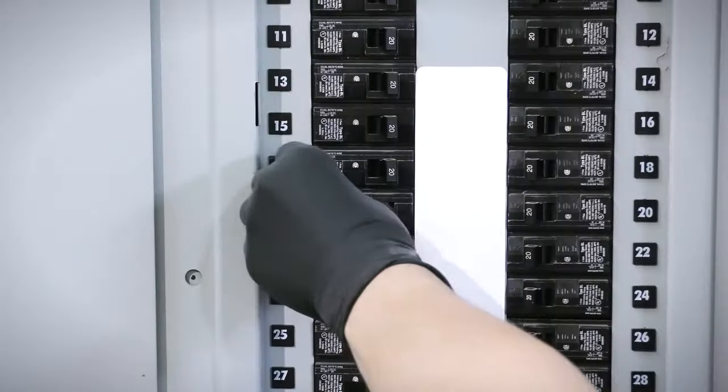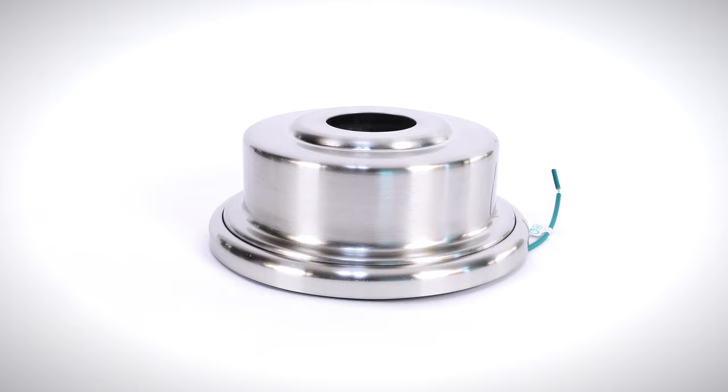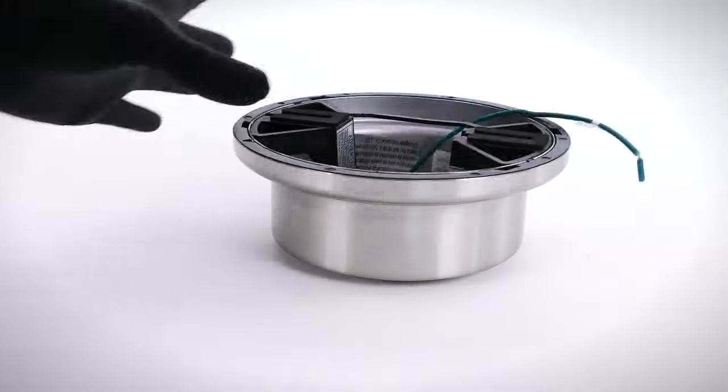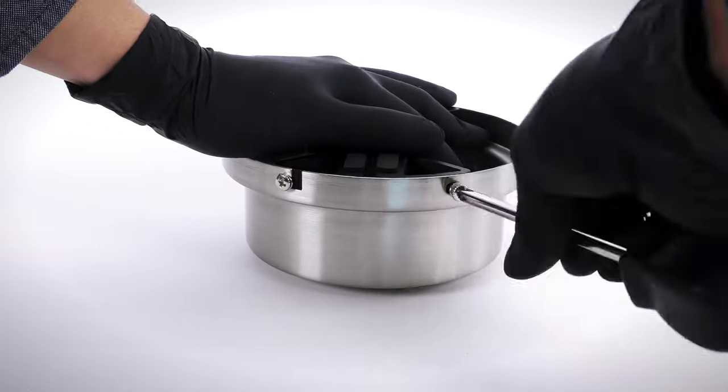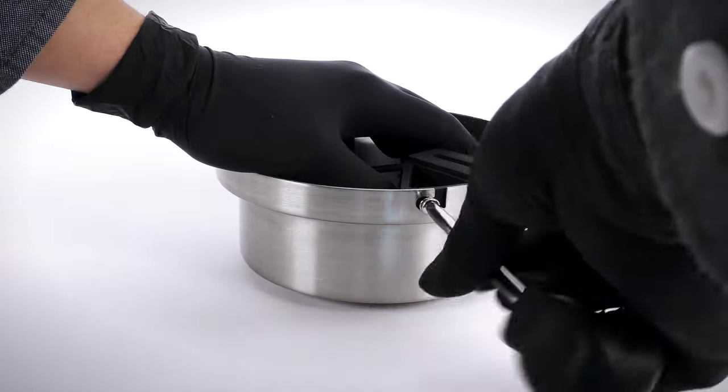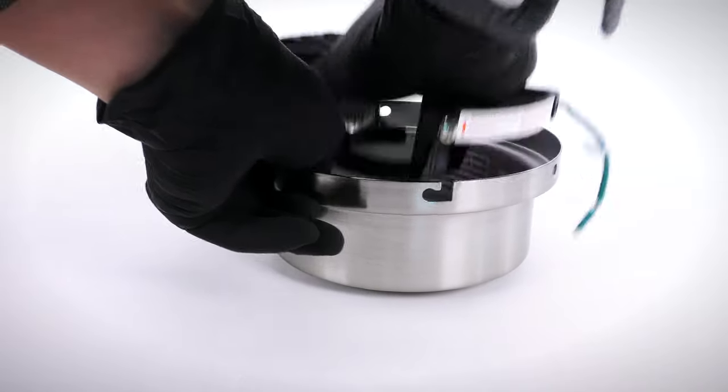Begin by turning power off at the breaker. On the canopy assembly twist and remove the canopy ring. Unscrew the non-slotted mounting bracket screws. Loosen the remaining 2 slotted screws. Remove the hanger bracket.